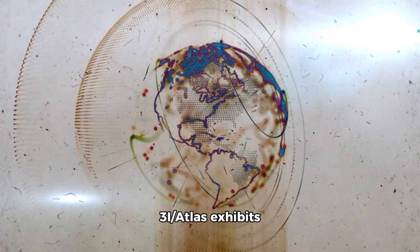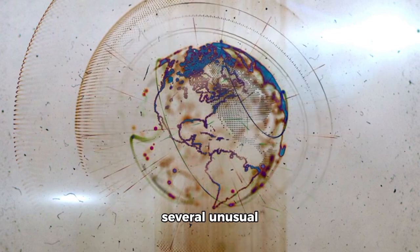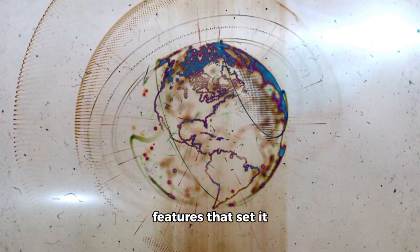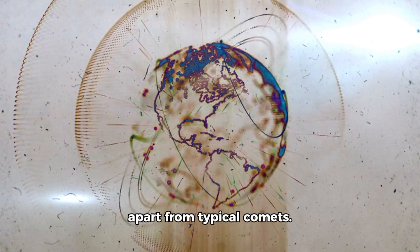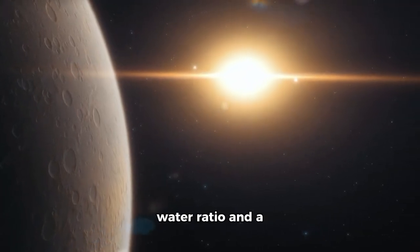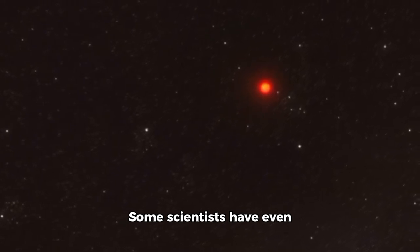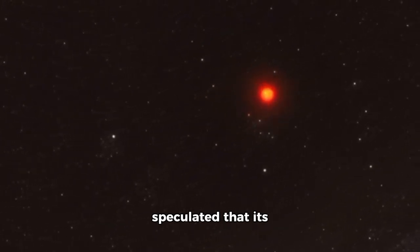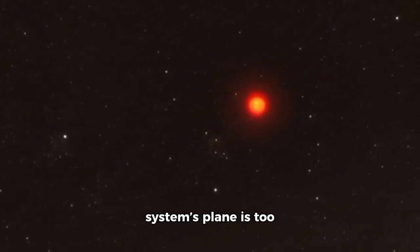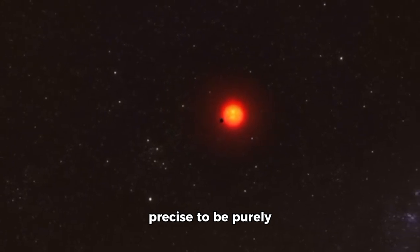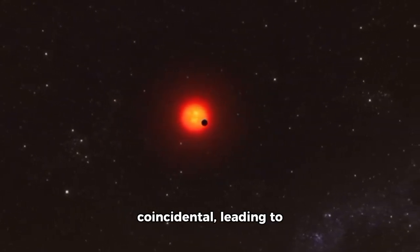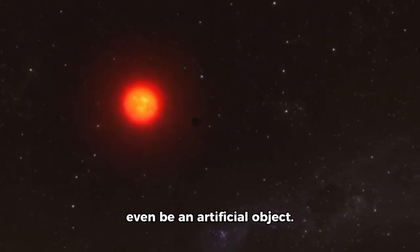Even more intriguingly, 3i Atlas exhibits several unusual features that set it apart from typical comets. It has a high CO2 water ratio and a flatter, straighter orbital path than most comets. Some scientists have even speculated that its alignment with the solar system's plane is too precise to be purely coincidental, leading to theories that it might even be an artificial object.